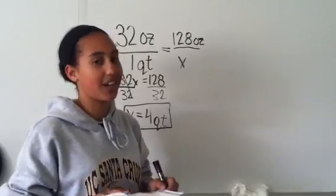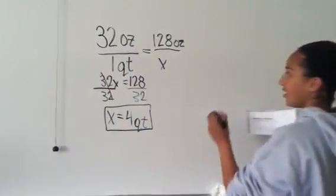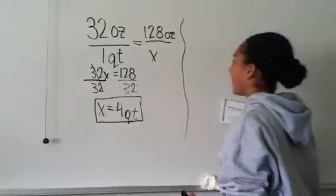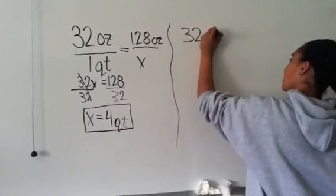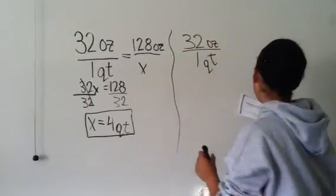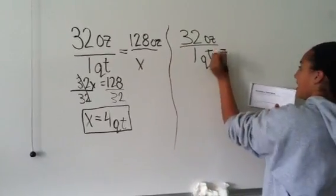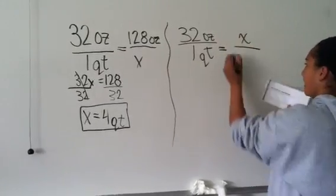Now for the second part, how many ounces are there in seven quarts? You do another equation. So you can start again with 32 ounces over one quart, and then you don't know how many ounces there are, so you put X for that over seven quarts.